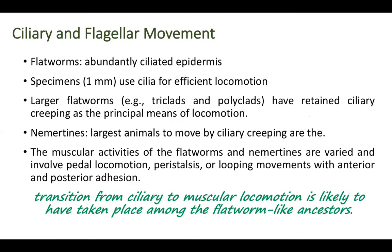In larger organisms such as flatworms, the lower surface has abundantly ciliated epithelium. For the smallest organisms, around 1 mm, ciliary waves are efficient for locomotion and they can move with cilia alone. But larger flatworms like triclads and polyclads use ciliary creeping along with some muscular activity. The muscular activities of flatworms and nemerteans involve pedal locomotion, peristalsis, or looping movements.